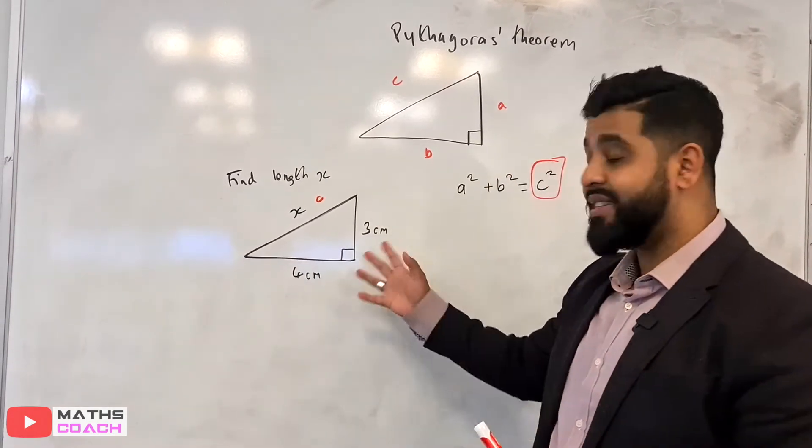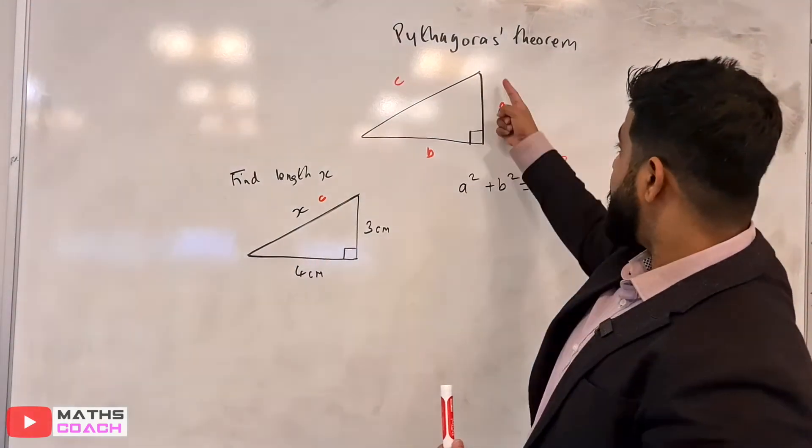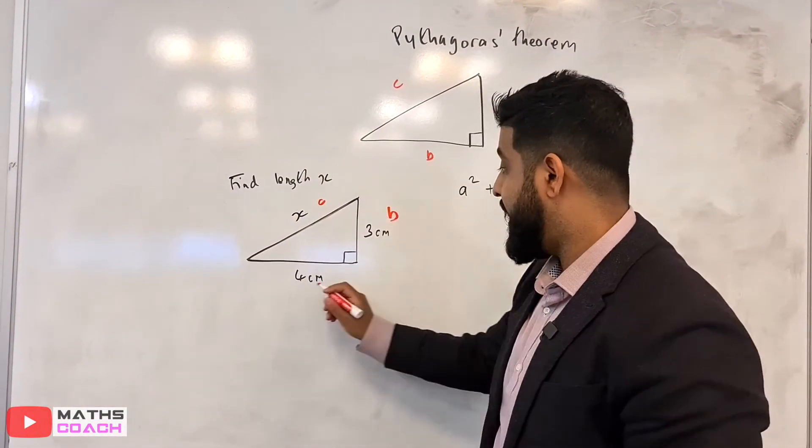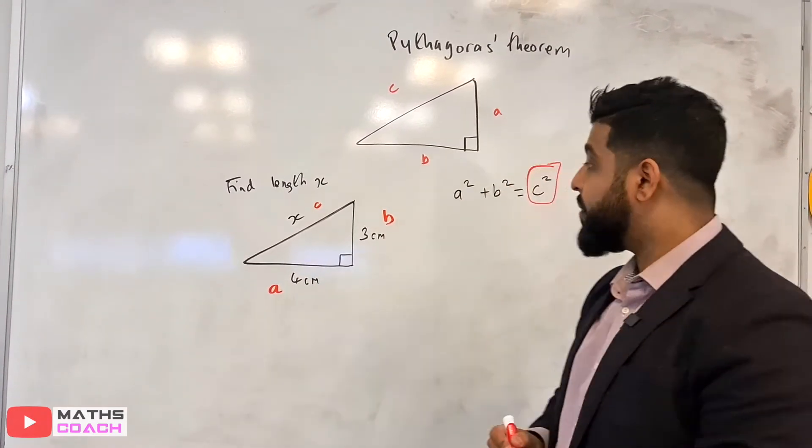Now just to show you that it doesn't matter which way round you write A and B, earlier on for our diagram, we did an A for this length, this time I'm just going to do B, and I will do this one as A. So let's apply the theorem.